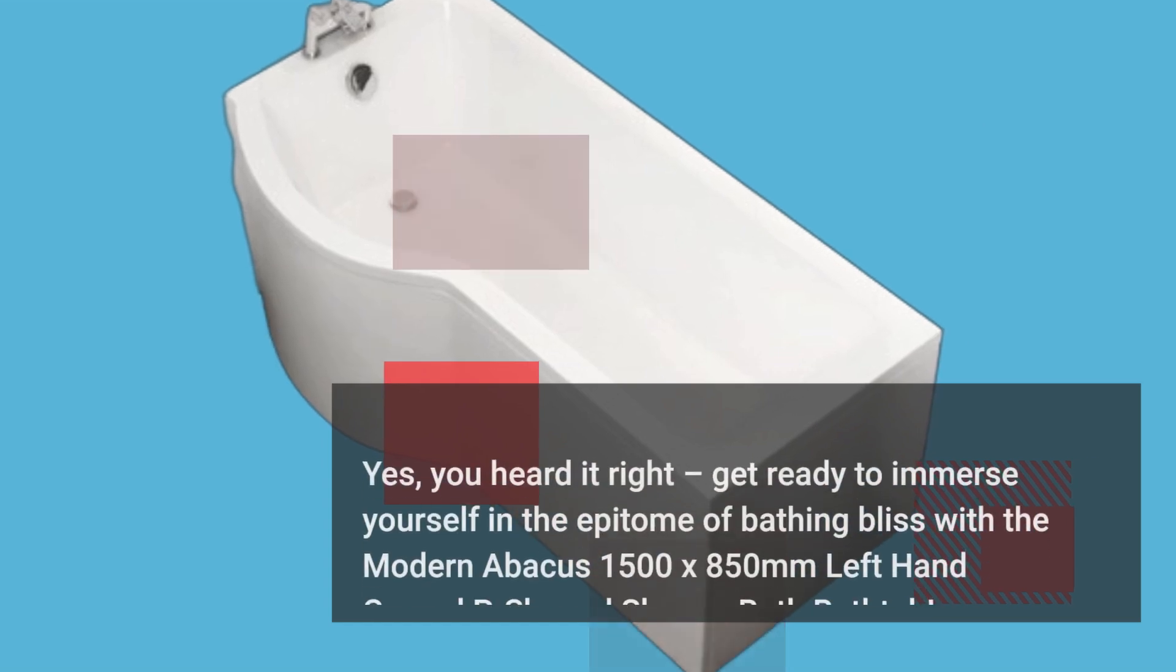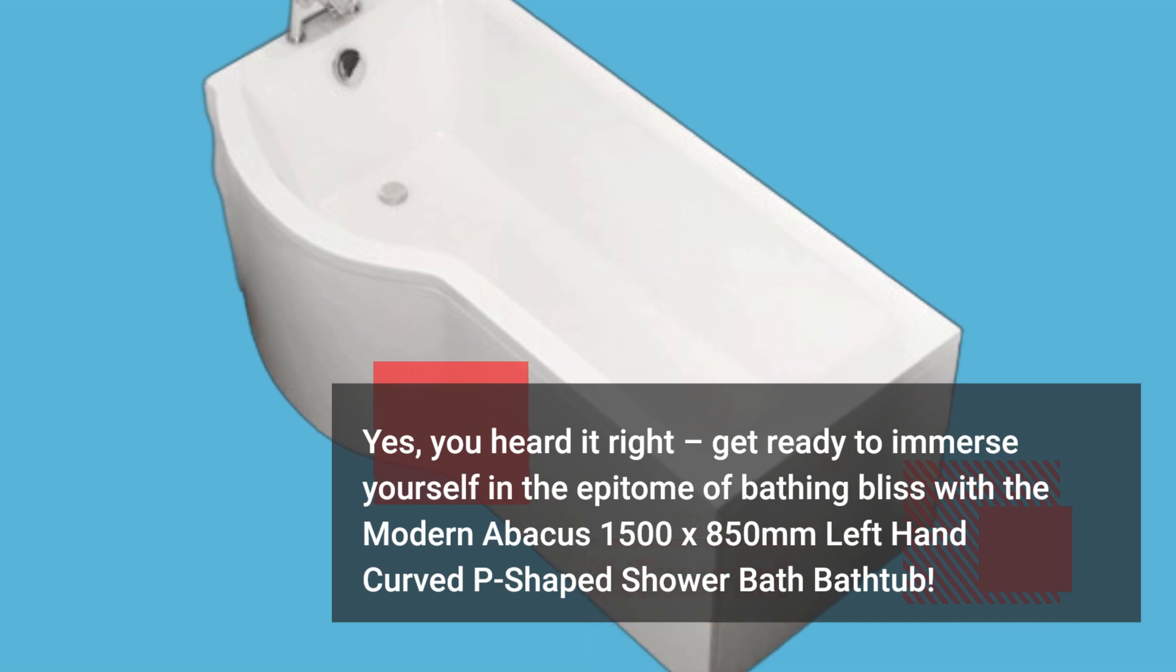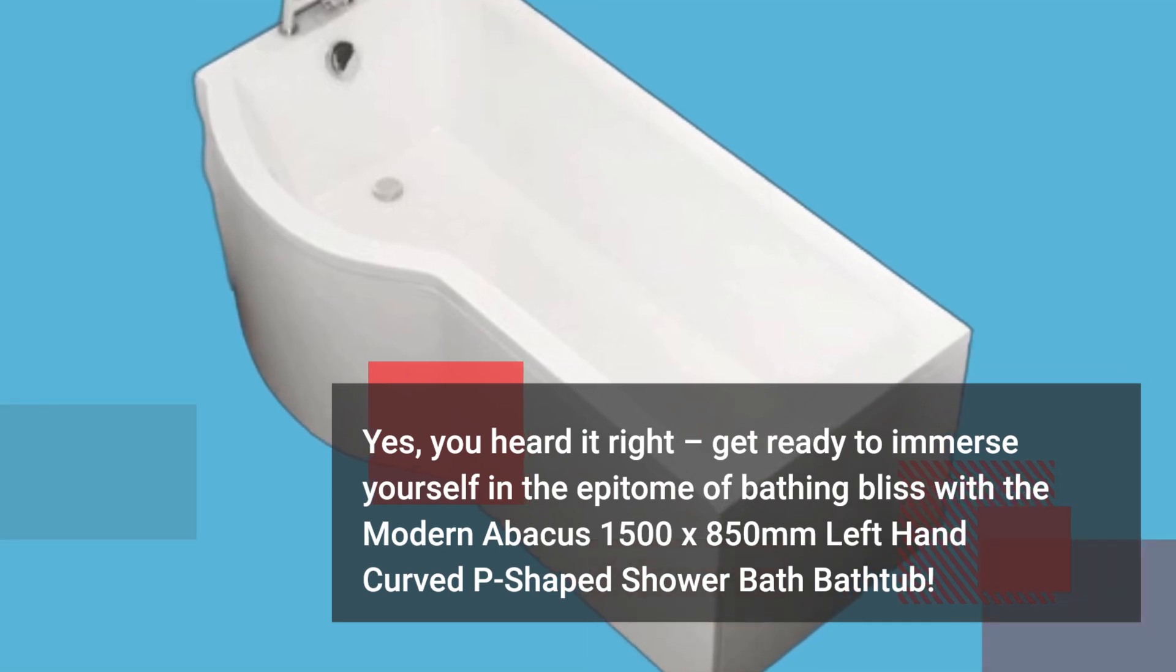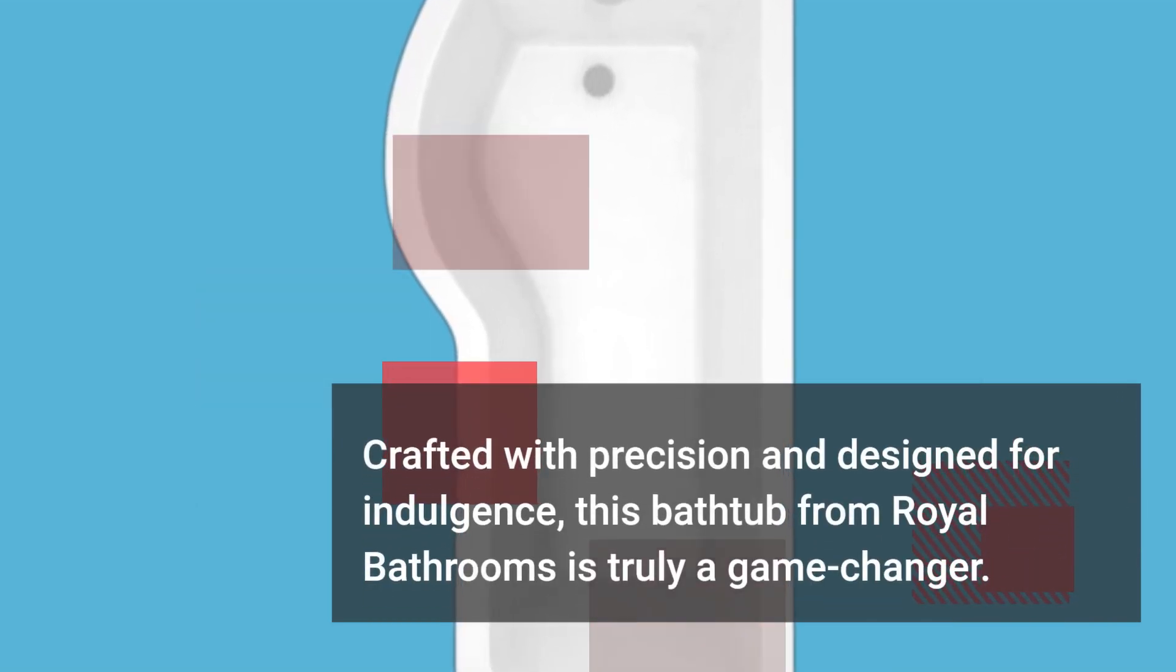Get ready to immerse yourself in the epitome of bathing bliss with the Modern Abacus 1500 x 850mm left-hand curved P-shaped shower bath bathtub. Crafted with precision and designed for indulgence, this bathtub from Royal Bathrooms is truly a game-changer.